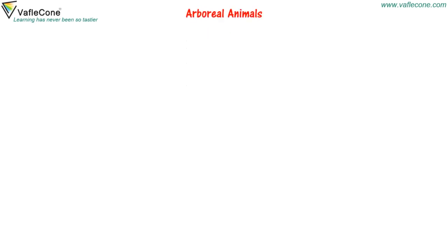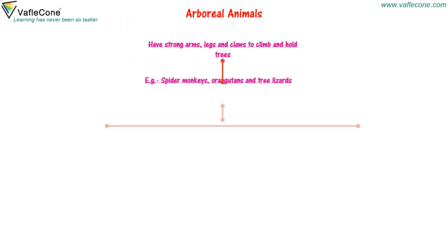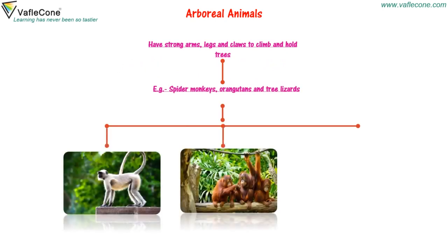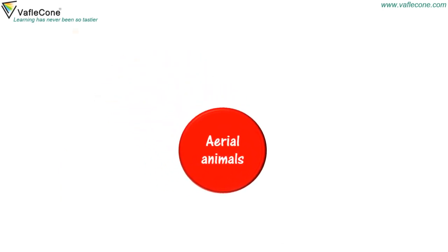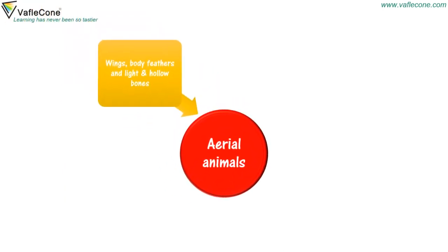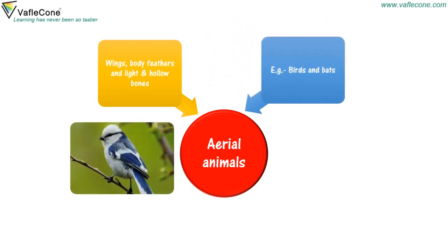Arboreal Animals: They have strong arms, legs, and claws to climb and hold trees. For example, spider monkeys, orangutans, and tree lizards. Aerial Animals: They have wings, body feathers, and light and hollow bones. For example, birds and bats.